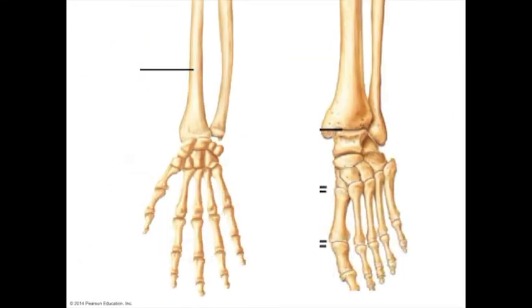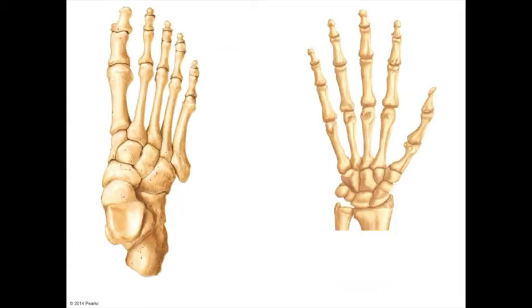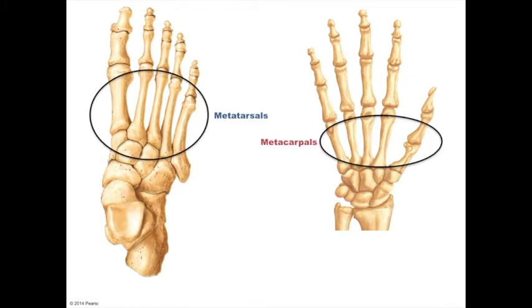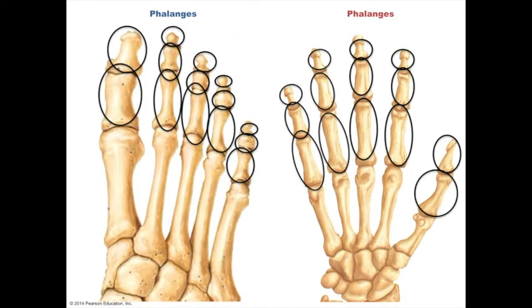At their distal end, these bones connect with the bones of the hands and feet to form the wrist and ankle joints. The hand consists of eight carpal bones; the foot consists of seven tarsal bones. The hand has five metacarpal bones and the foot has five metatarsal bones. For both, the five digits are made up of twelve phalanges, which conveniently all have similar names.